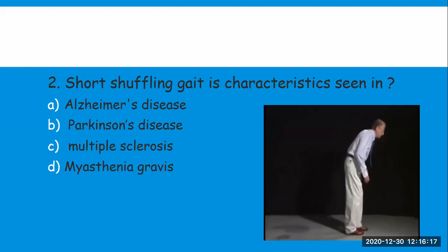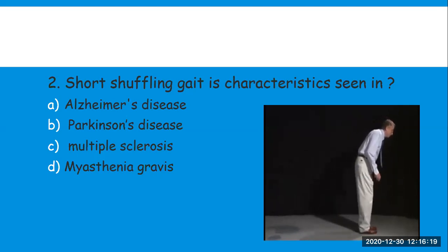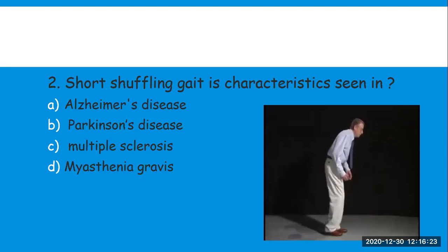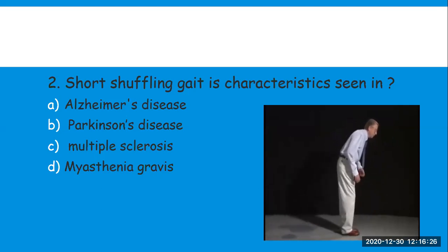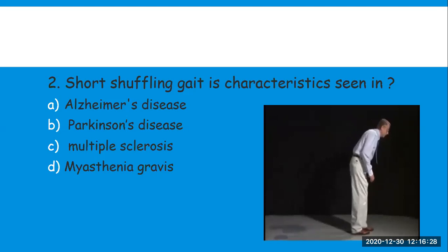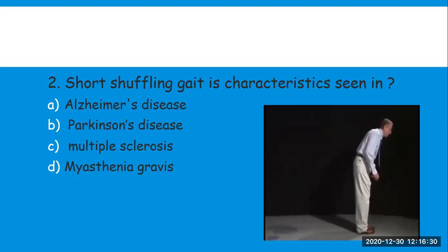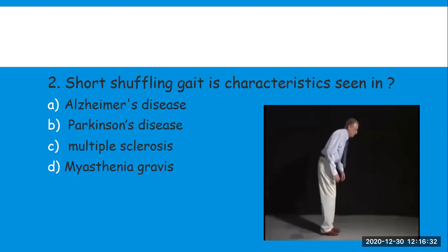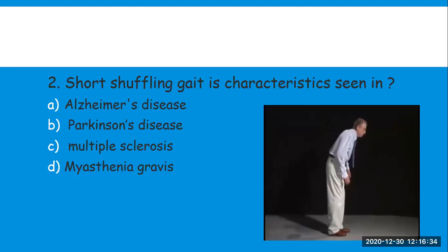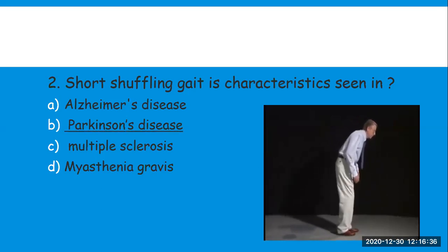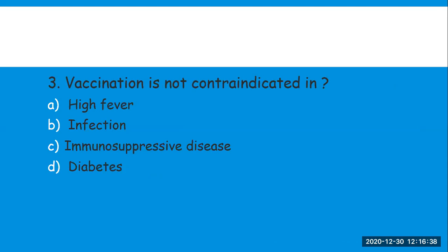Next question — you can see a picture of this gait, though it will not be given in the exam paper. This is known as a short shuffling gait. Short shuffling gait is a characteristic seen in which disease? Options are: A) Alzheimer's disease, B) Parkinson's disease, C) multiple sclerosis, D) myasthenia gravis. The right answer is Parkinson's disease.